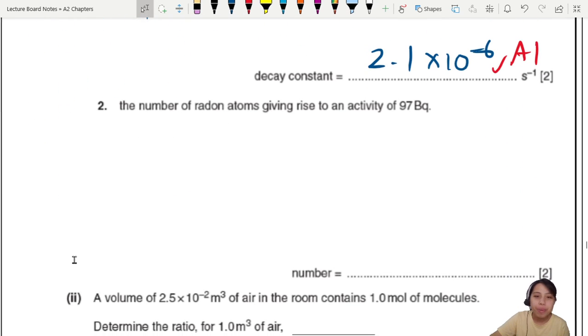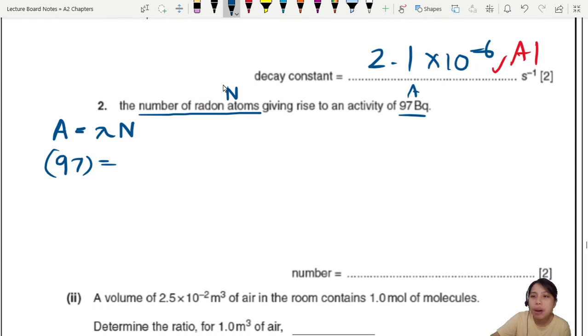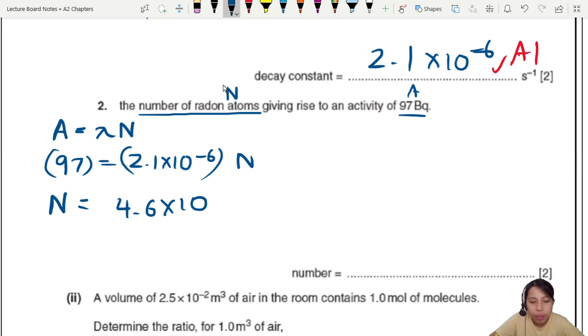Next. So now they ask us calculate the number of radon atoms. Number of atoms means the N, giving rise to activity A. What equation has N and A in it? This one is activity which is proportional to N or the actual value, lambda N. Lambda is a constant. So I guess we can plug all our values in now. Here is 97. Lambda is previously found to be 2.1 times 10 negative 6, times N. So now we will find our value of N which is 4.6 times 10 to the 7th. I really like this activity equation because it's so easy, you just sub in.